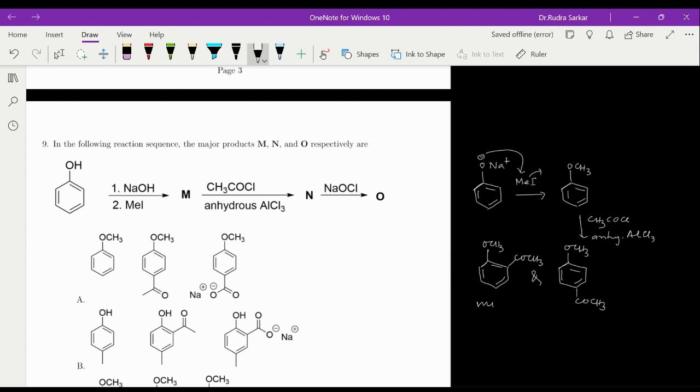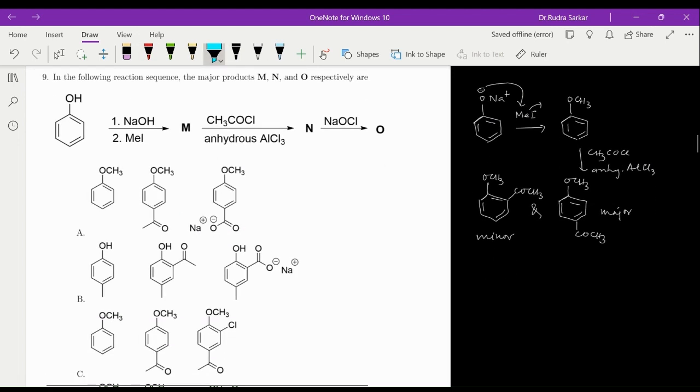So this is the minor one, and that is the major one. And now, if we treat this type of a product, that is N, the major one with sodium hypochlorite, obviously we will expect a haloform reaction to happen, and the product that will be formed will be, obviously, this one. So the option correct over here is A.